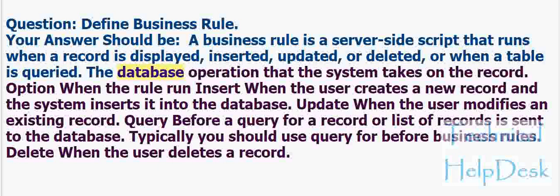The database operation options for when the rule runs: Insert — when the user creates a new record and the system inserts it into the database. Update — when the user modifies an existing record. Query — before a query for a record or list of records is sent to the database; typically used for before business rules. Delete — when the user deletes a record.